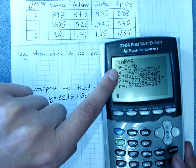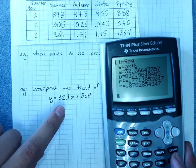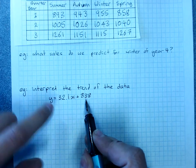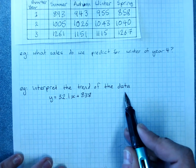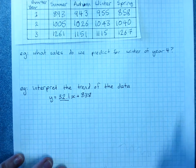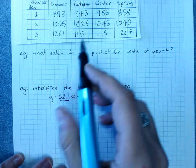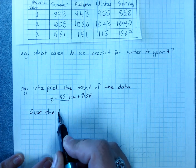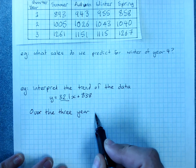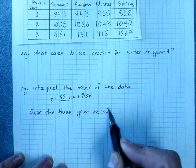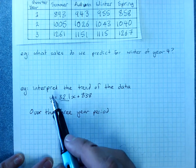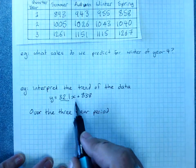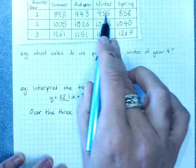And using A and B, the line of best fit is 32.1x plus 838. If we interpret the trend, we're looking at the gradient. So over this three year period, state what time we're looking at, sales increased on average at about 32 sales per quarter. Because each of these x's, 1, 2, 3, 4 is a quarter.